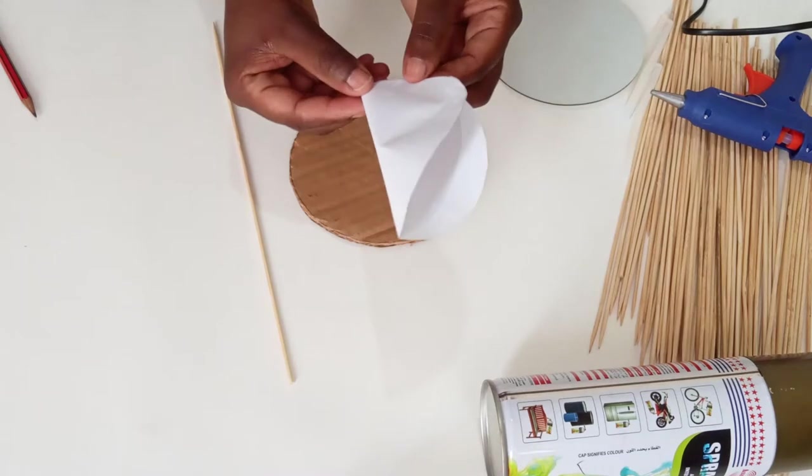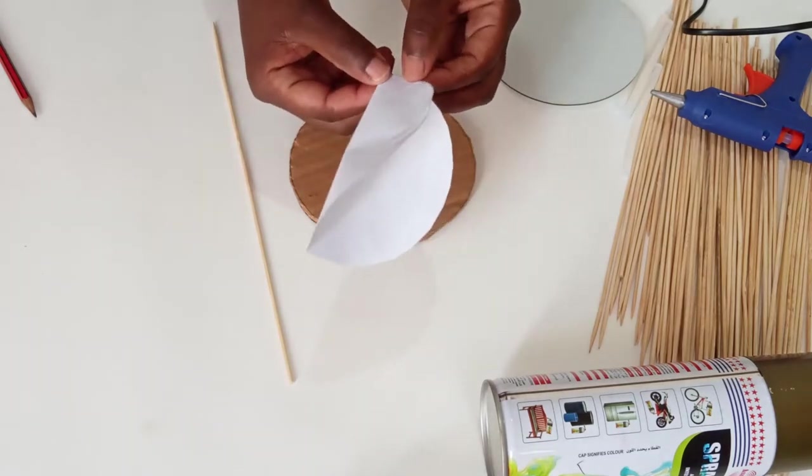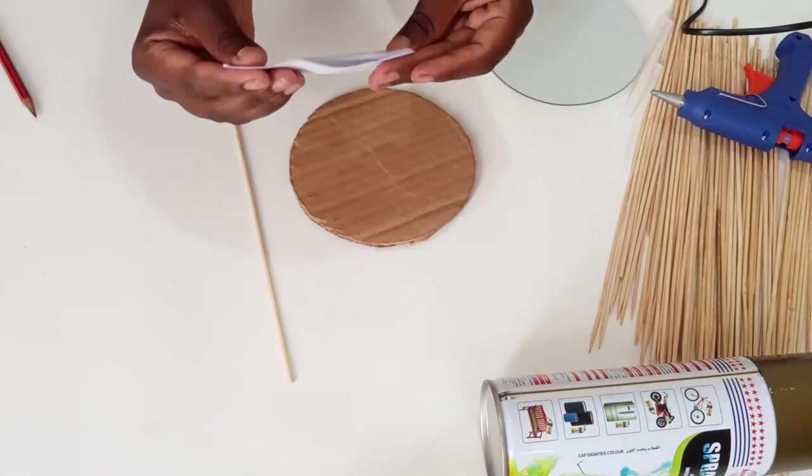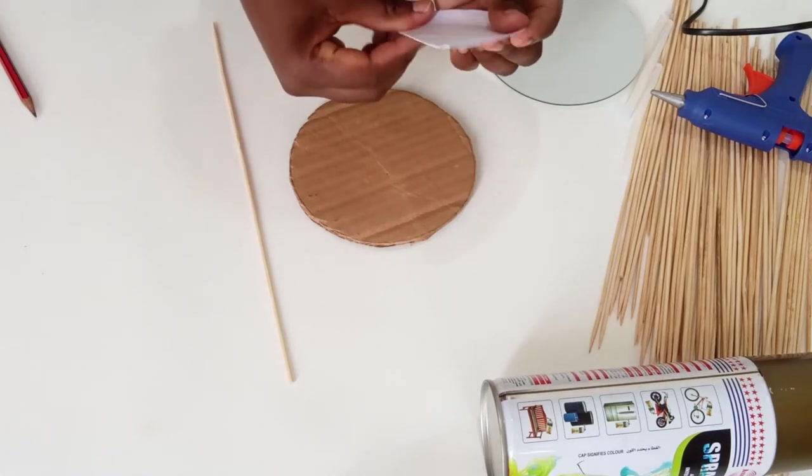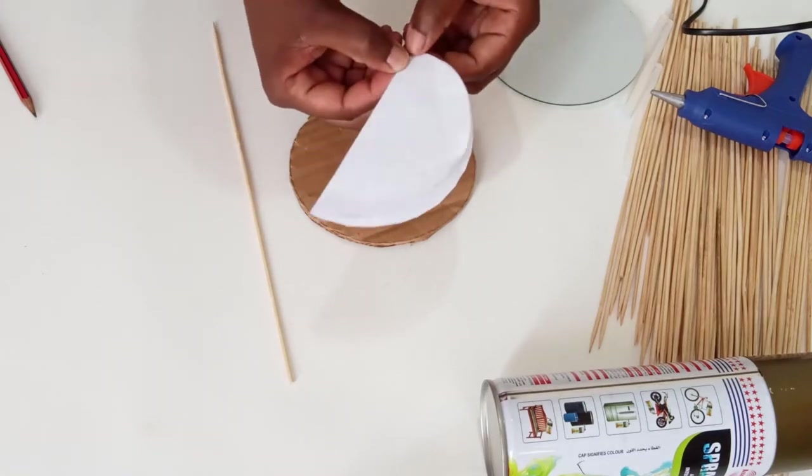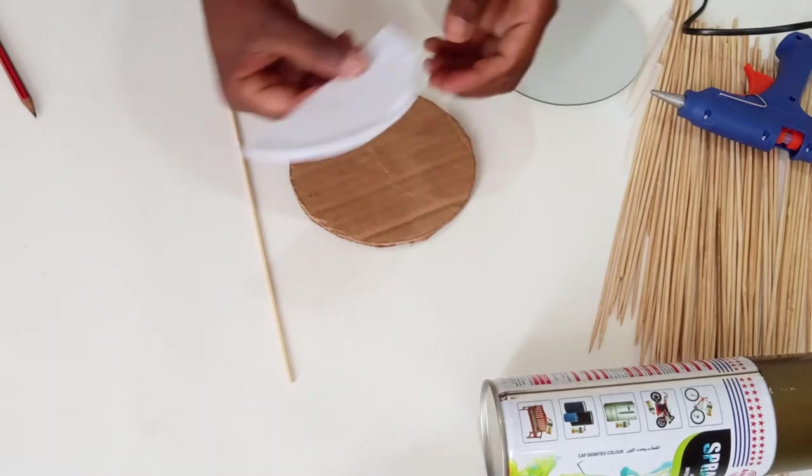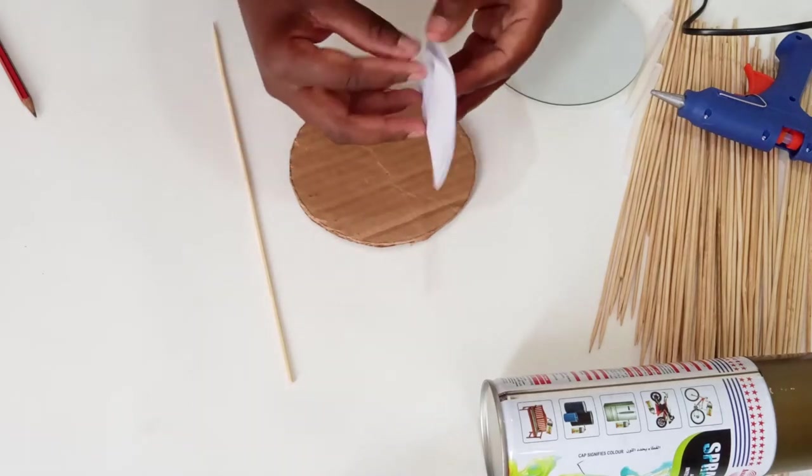If you have a ruler and you're stable with your hands, I would advise you to use that because it's much easier with a ruler. You just draw the lines from center, side to side in different angles.